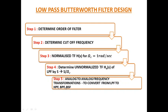If any of these filters — high pass, band pass, or band stop — are required, you first need to design a low pass filter following steps 1 to 4. Then in step 5, apply a suitable transformation formula to obtain the high pass, band pass, or band stop filter as per the specifications.